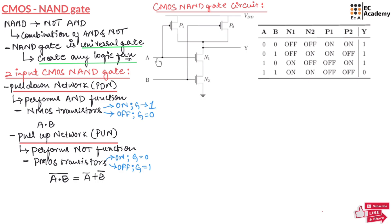When A is equal to 1 and B is equal to 0, transistor N1 will be ON and transistor N2 will be OFF. Here P1 will be OFF and transistor P2 will be ON. That is why VDD will be available at the output through transistor P2, and the output will be equal to 1.